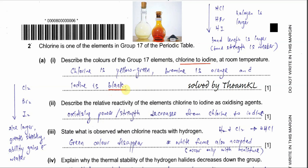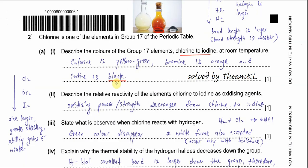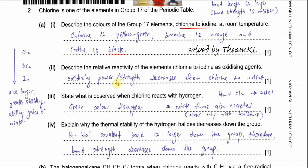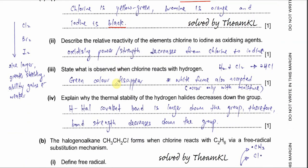Sometimes iodine can be described as grey, but it's a black solid. For Part 2: Describe the relative reactivity of the elements chlorine to iodine as oxidizing agents.